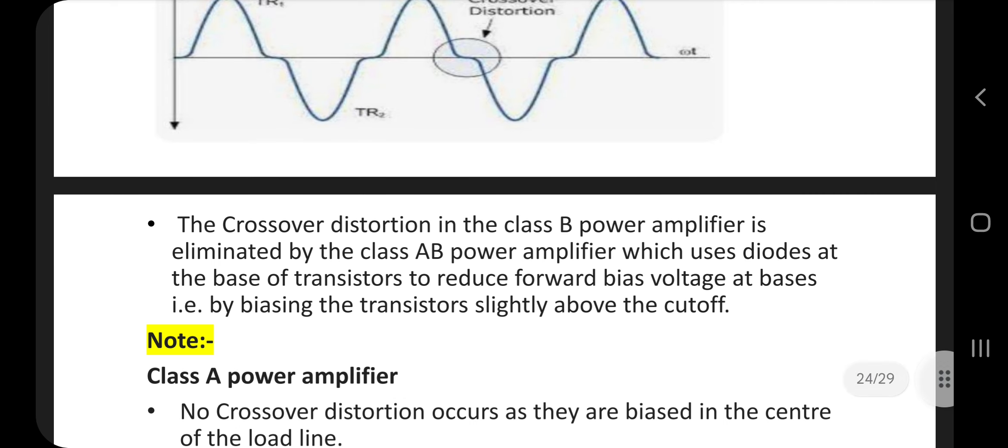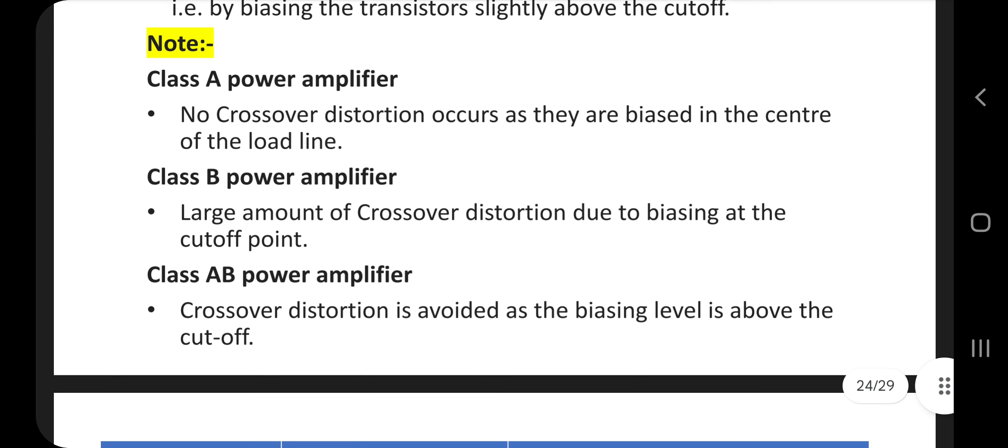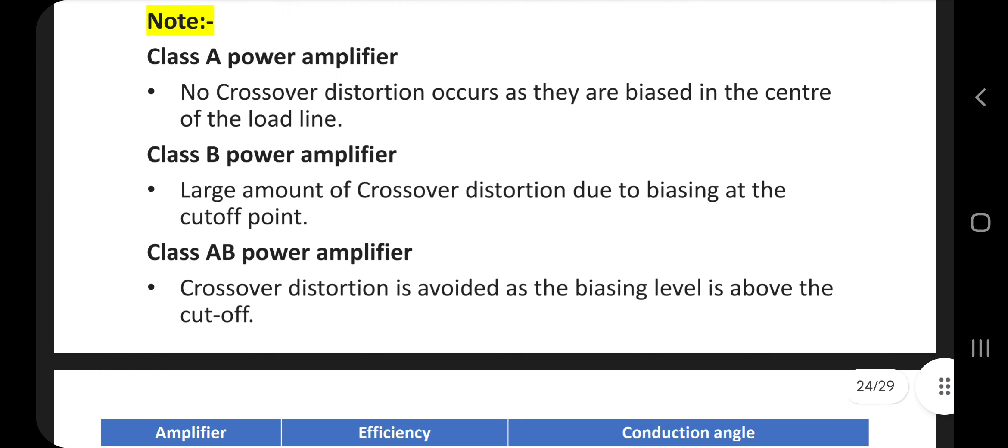The crossover distortion in the class B power amplifier is eliminated by the class AB power amplifier, which uses diodes at the base of transistors to reduce the forward bias voltage at bases, that is by biasing the transistor slightly above the cutoff. Note, class A power amplifier: no crossover distortion occurs as they are biased in the center of the load line. Class B power amplifier: large amount of crossover distortion due to biasing at the cutoff point. Class AB power amplifier: crossover distortion is avoided as the biasing level is above the cutoff.